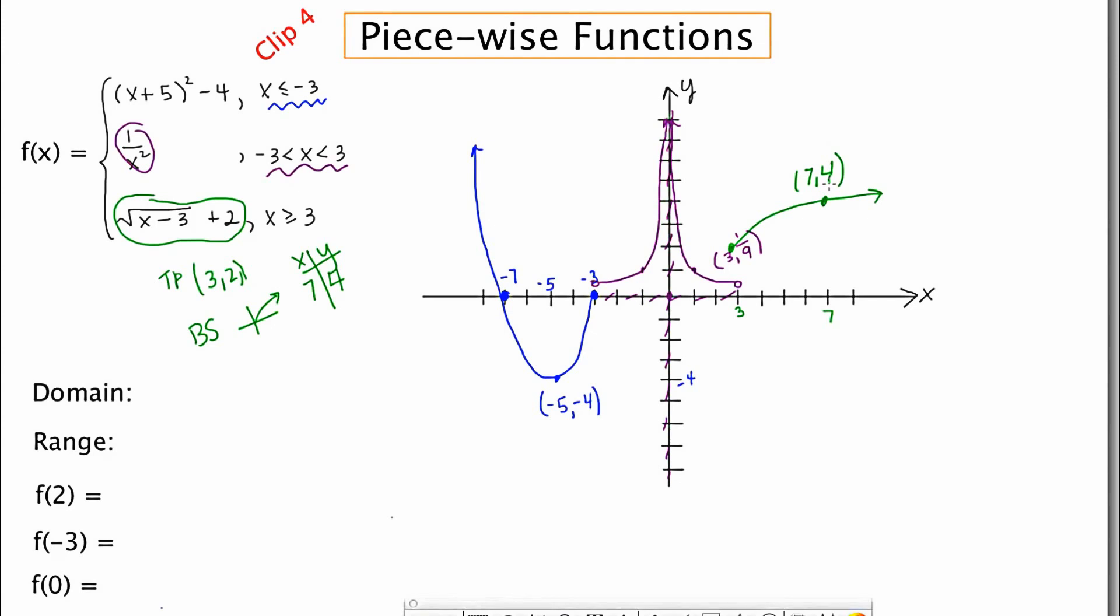So here we have our piecewise function. It's made of three pieces, the portion of the parabola, the portion of the praying mantis and the portion, well, it's actually the entire wing.